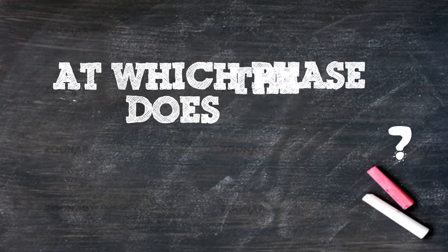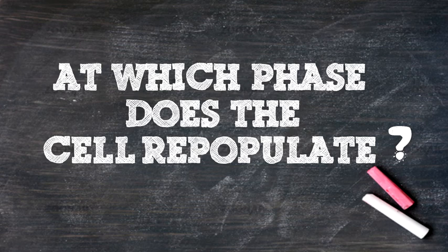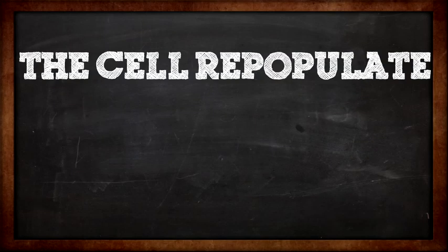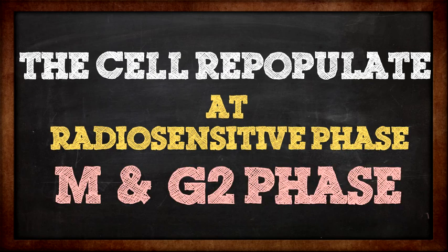At which phase does the cell repopulate? The cell repopulates at most radiosensitive phase which is M and G2 phase.